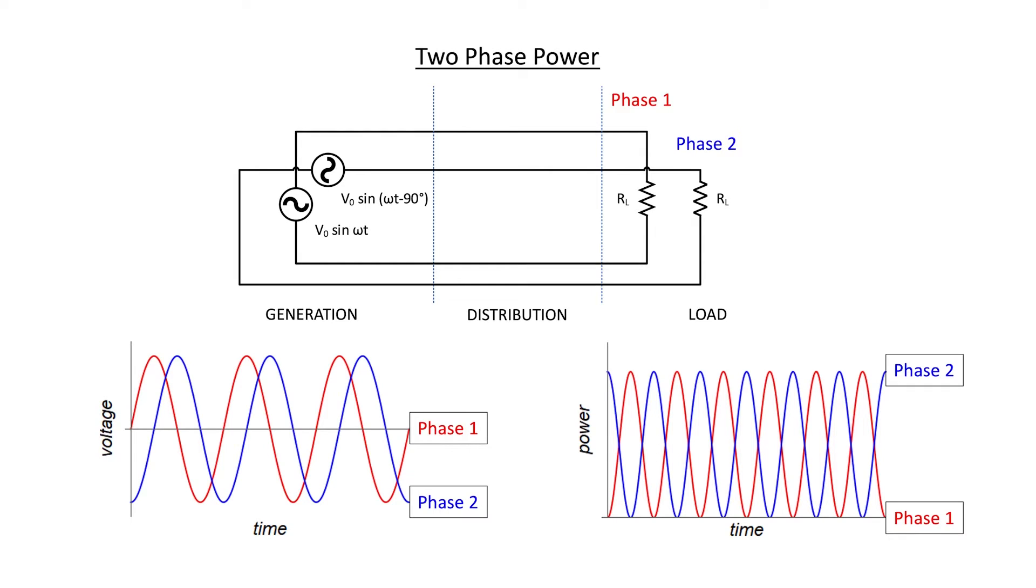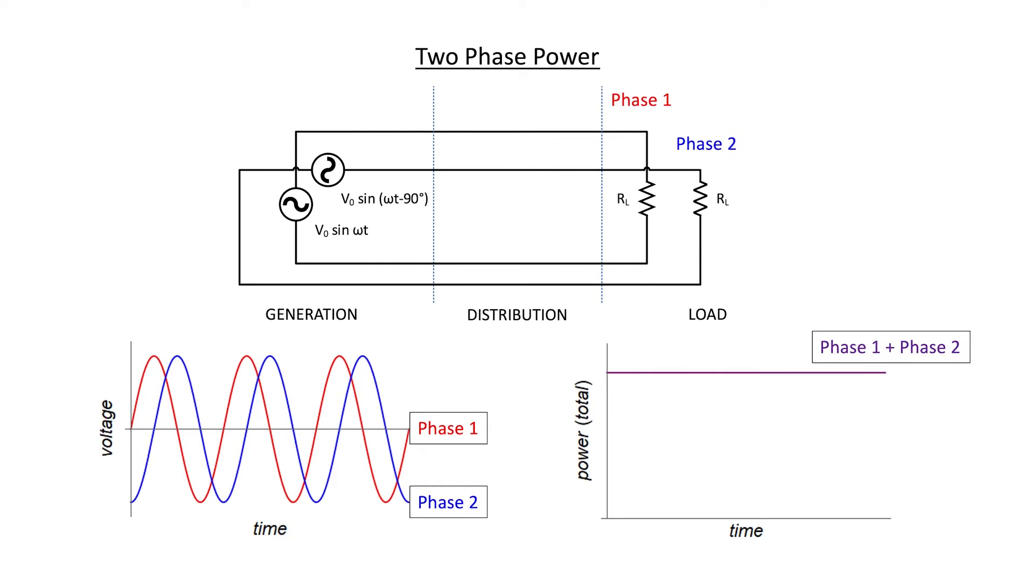As you might recall from the previous video, both phases are sinusoidal. The power in each of the individual phases is pulsed, but the power exiting the turbine when you add up the individual phase power is constant. That's one of the advantages of a two-phase power distribution system over a single-phase power distribution system when the power exiting the turbine is pulsed.